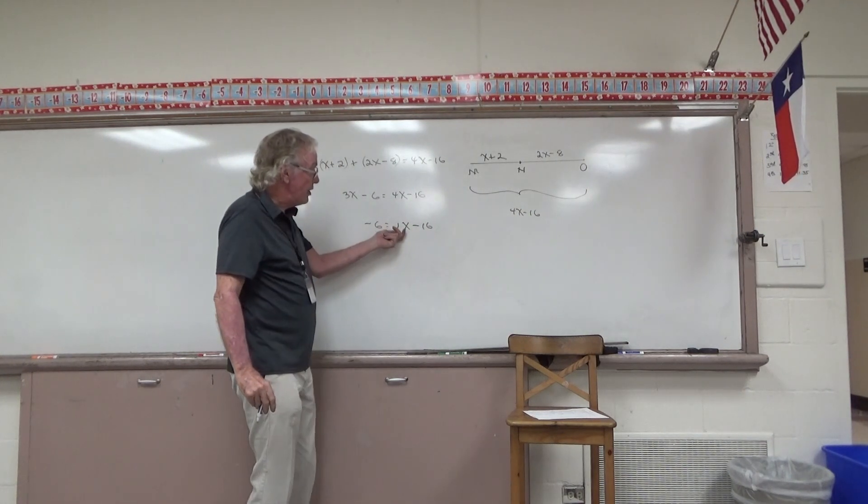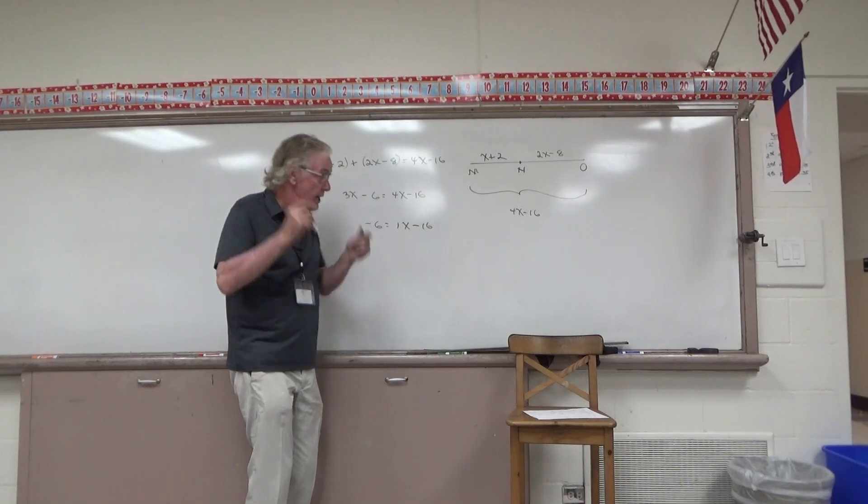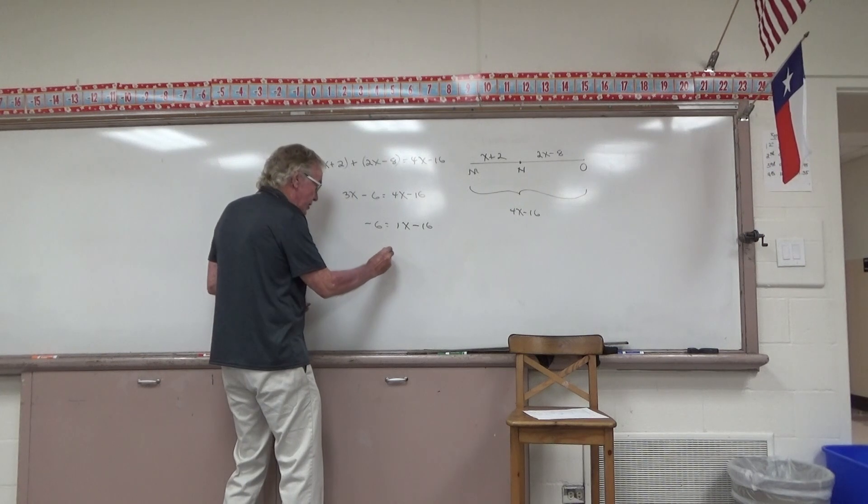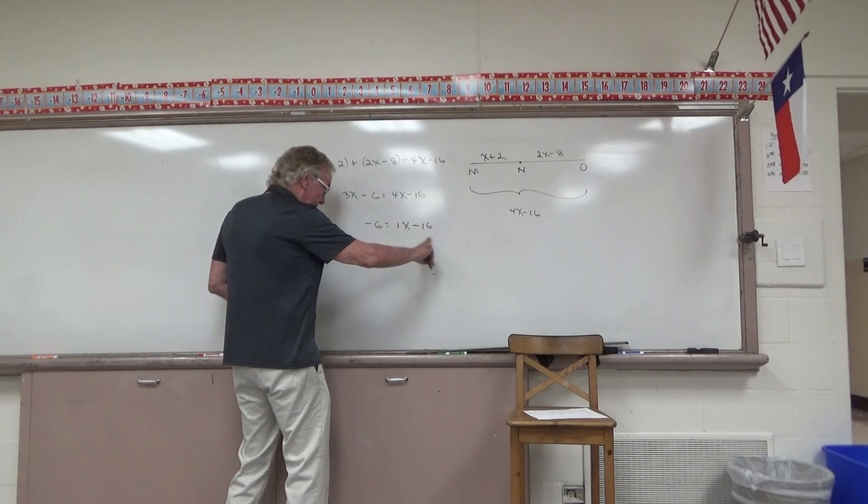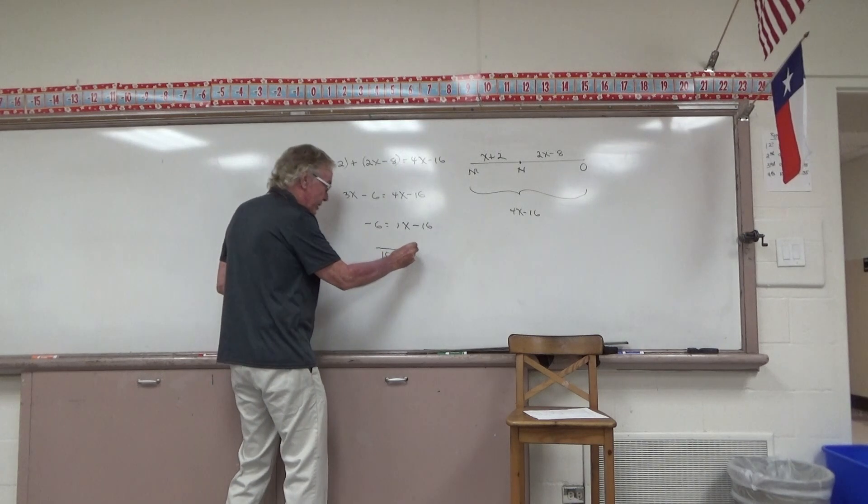As we isolate the variable X, I would add 16 to both sides. When I add 16 to both sides, a negative 6 plus 16 leaves me with 10. Add 16 to this side, and I'm just left with 1X. I'm convinced that X is equal to 10.